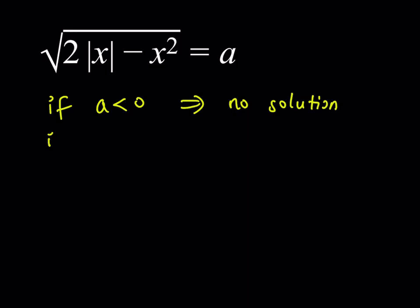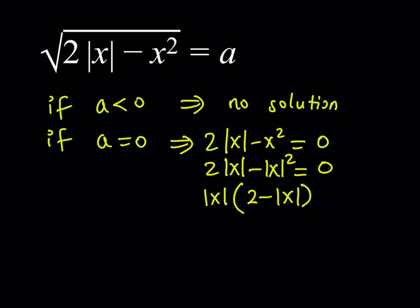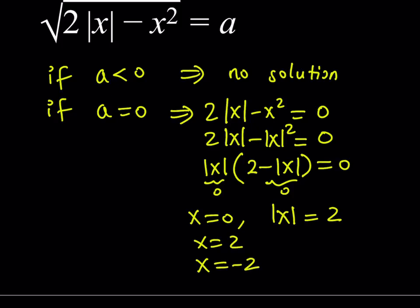What happens if a is equal to zero? If you replace a with zero, you get two times the absolute value of x minus x squared equals zero. We can write this as two times the absolute value of x minus the absolute value of x squared, since x squared cannot be negative. Factoring out the absolute value of x gives absolute value of x times (two minus absolute value of x) equals zero. This gives three solutions: x equals zero, and absolute value of x equals two, meaning x equals two or x equals negative two.